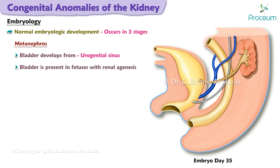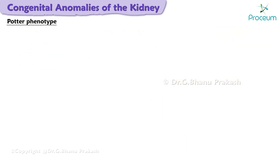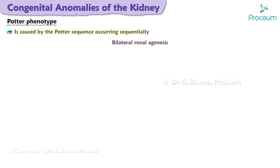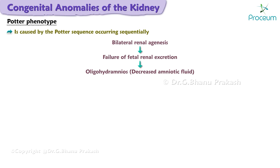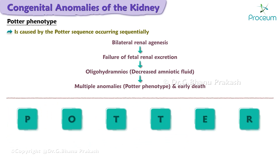The bladder develops from a separate but continuous structure termed the urogenital sinus. The bladder is present in fetuses with renal agenesis but is empty because of absent urine production. Potter phenotype is caused by the Potter sequence occurring sequentially: bilateral renal agenesis leads to failure of fetal renal excretion, leading to oligohydramnios, resulting in decreased amniotic fluid, leading to multiple anomalies and early death.